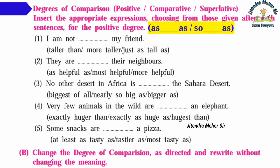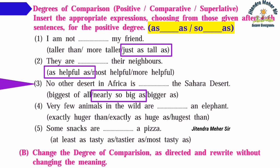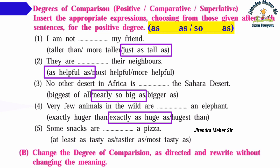Answers for positive degree: (1) 'I am not — my friend' — just as tall as. (2) 'They are — their neighbors' — as well off as. (3) 'No other desert in Africa is — the Sahara Desert' — so big as. (4) 'Very few animals in the world are — an elephant' — exactly as huge as. (5) 'Some snacks are — a pizza' — at least as tasty as.